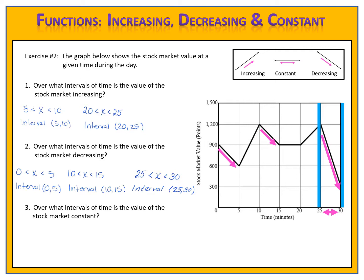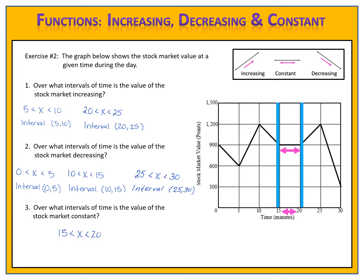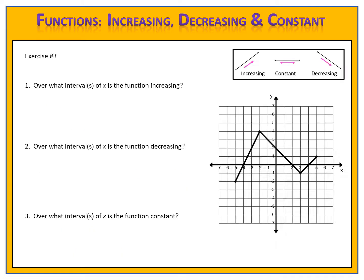There are three intervals where the stock market value decreased during this period of time. For problem 3, over which intervals of time is the value of the stock market constant? We look at the graph and the constant section goes from 15 to 20. In exercise 3, we have a generic graph of a function on the coordinate plane. We want to answer the same questions over what intervals of x the function is increasing, decreasing, or constant.